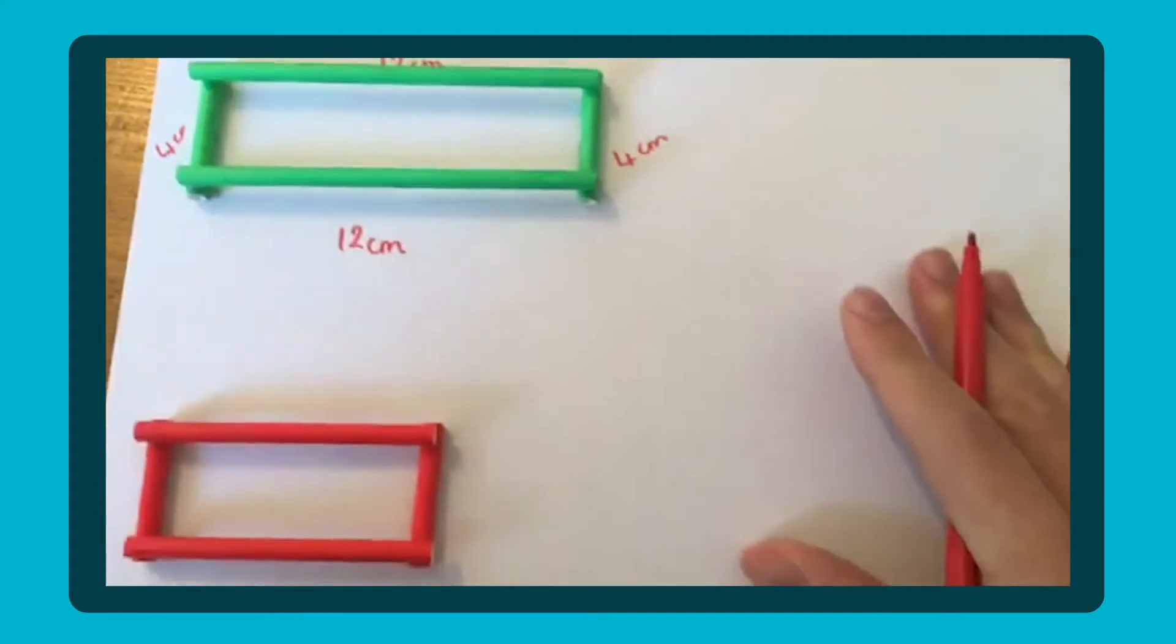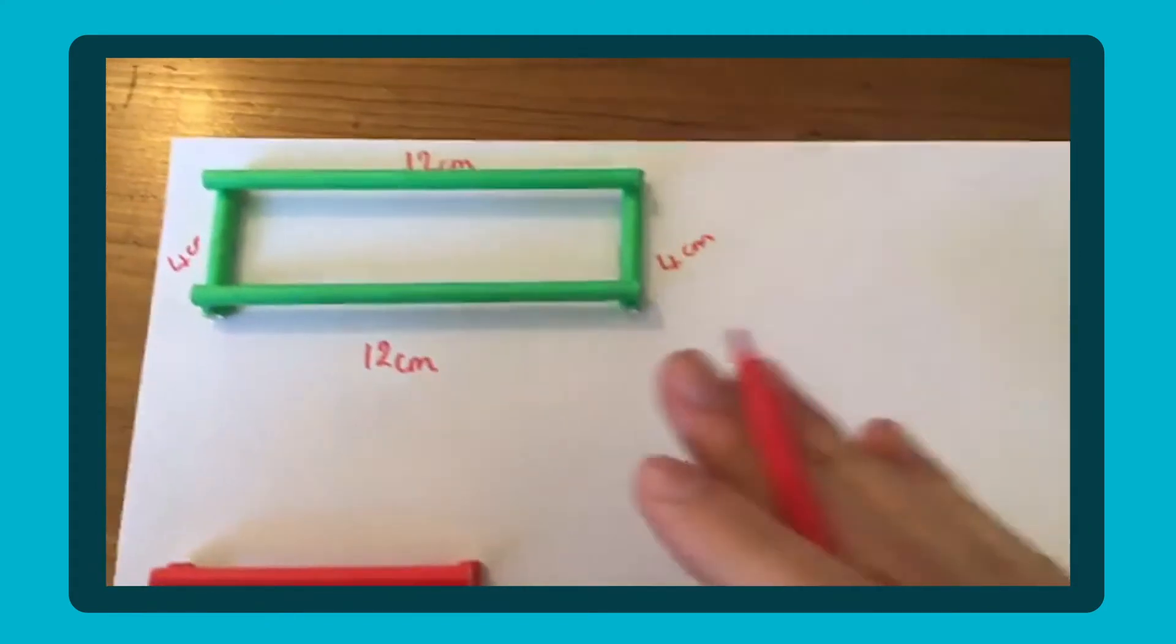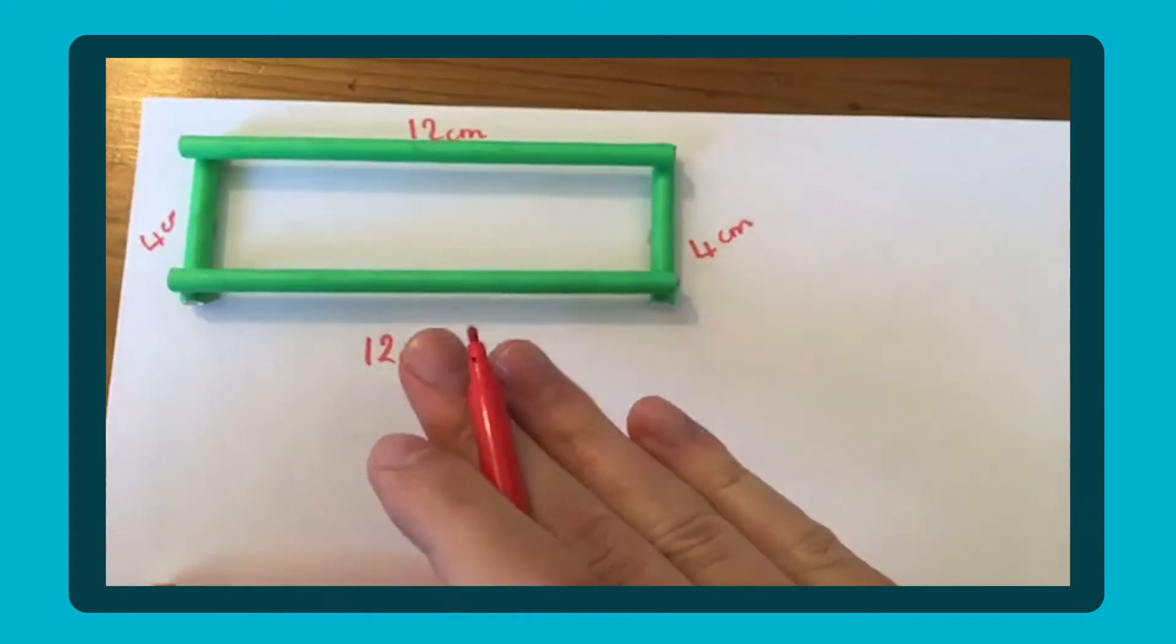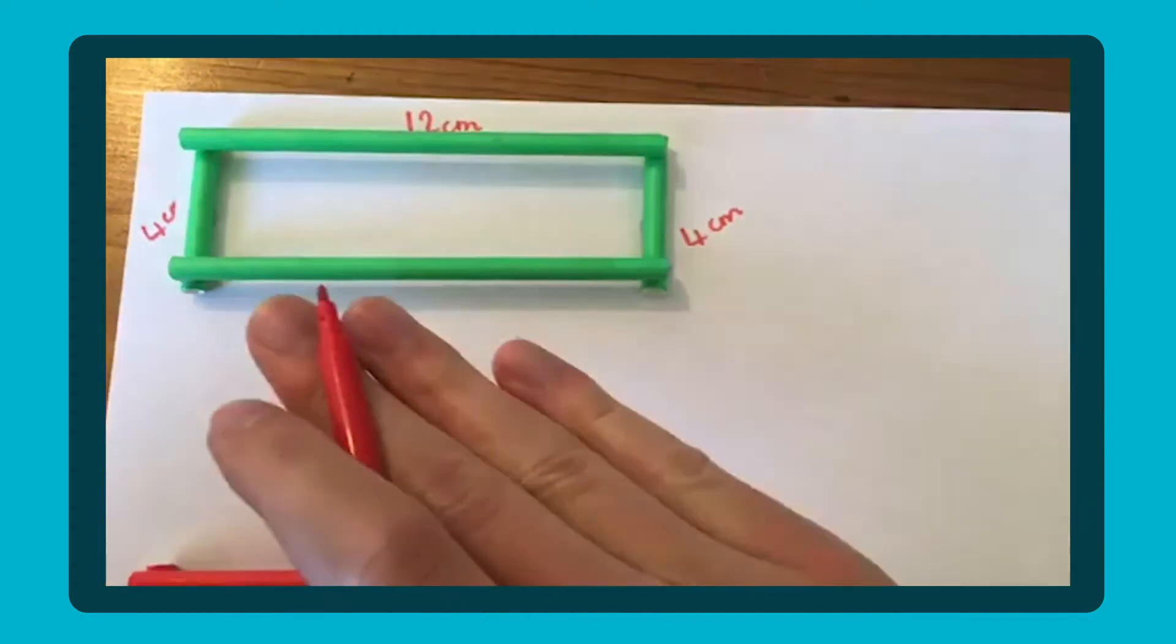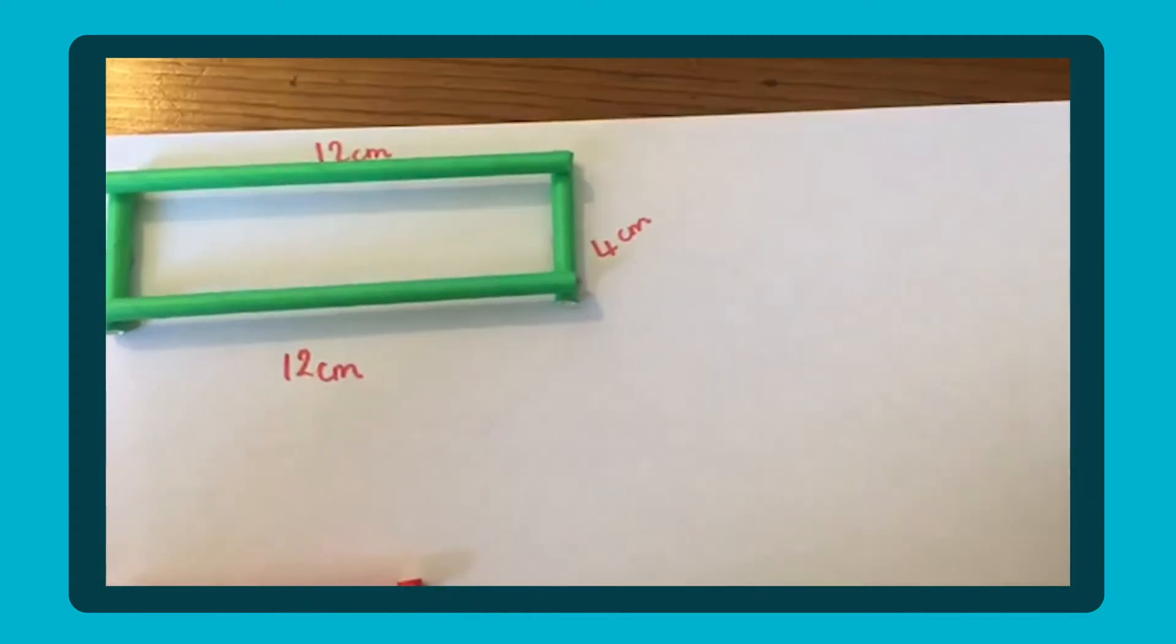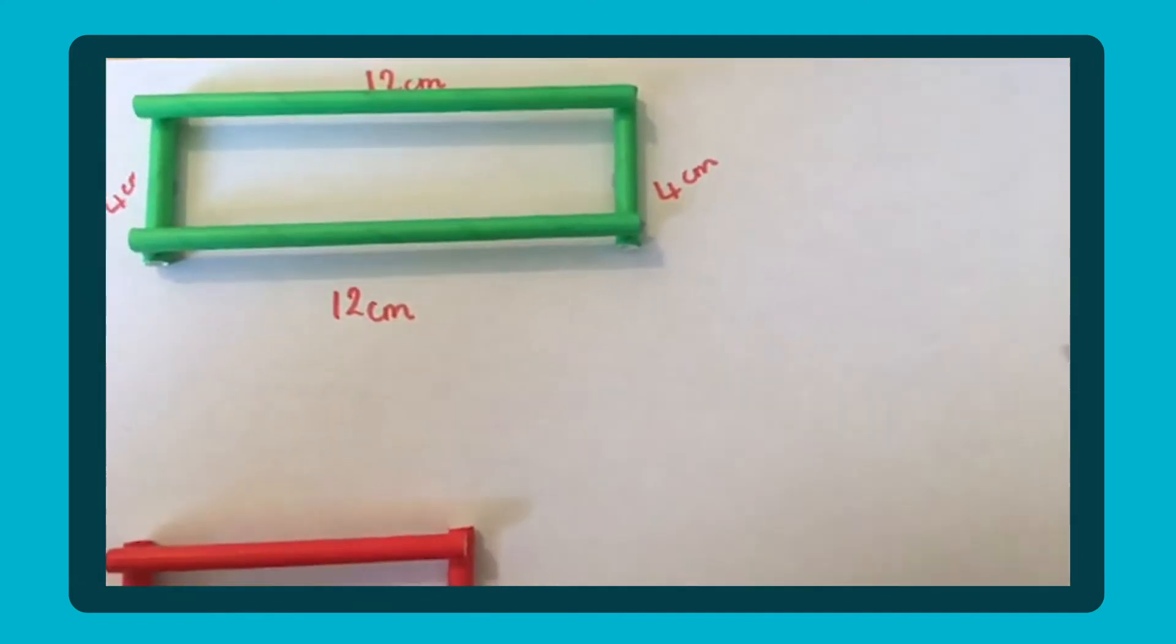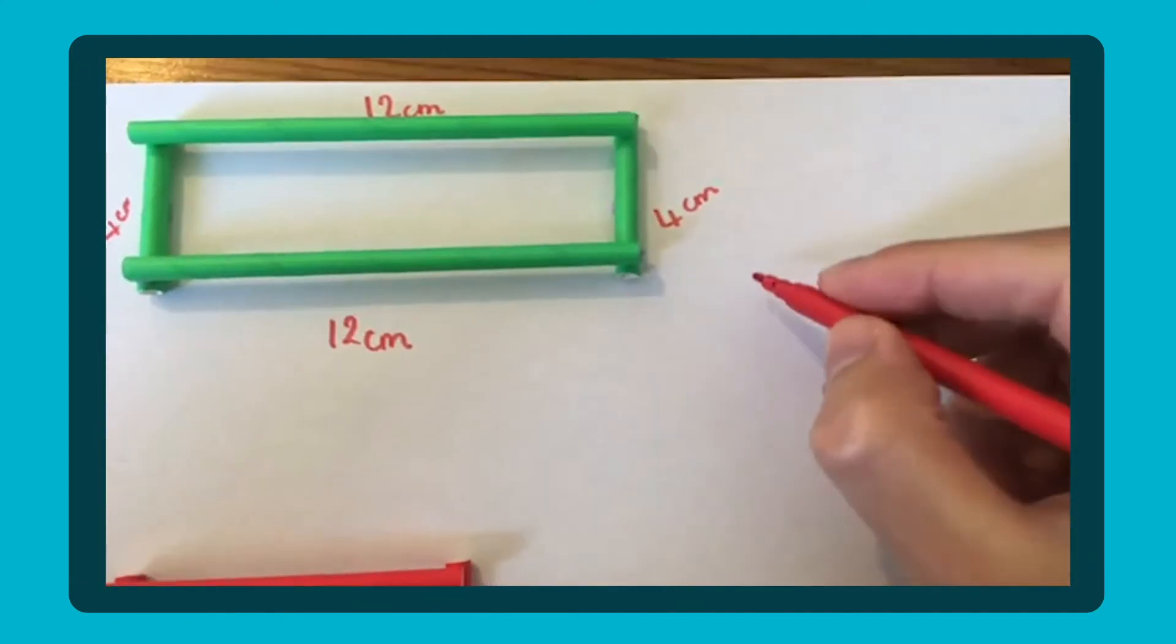So once you've cut your straws or your string, you've built the rectangle and your child has measured the sides. It's then about the child finding the total perimeter. And they find that by adding up all the sides.